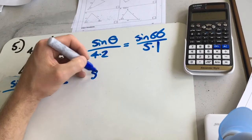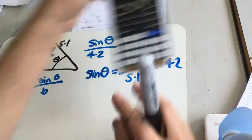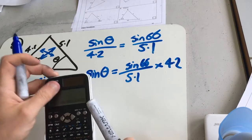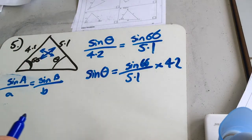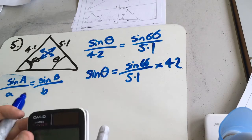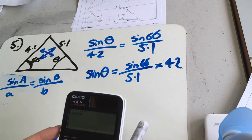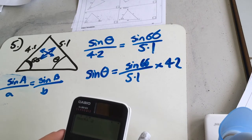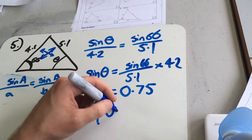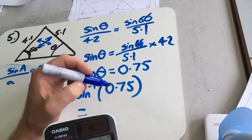So if we times up by 4.2, we get sine theta is sine 66 over 5.1 times 4.2. And we can calculate that. And it gives us an angle of, ooh, hang on. Sine 66 divided by 5.1 times 4.2. So we get sine of theta equals 0.75. So inverse sine arc sine of 0.75 gives us 48.8 degrees.